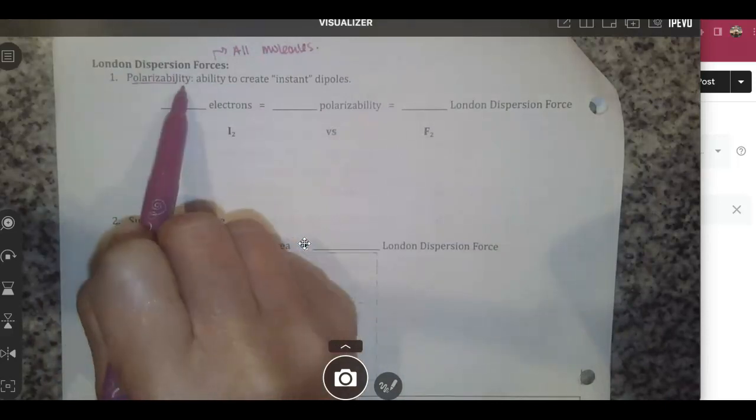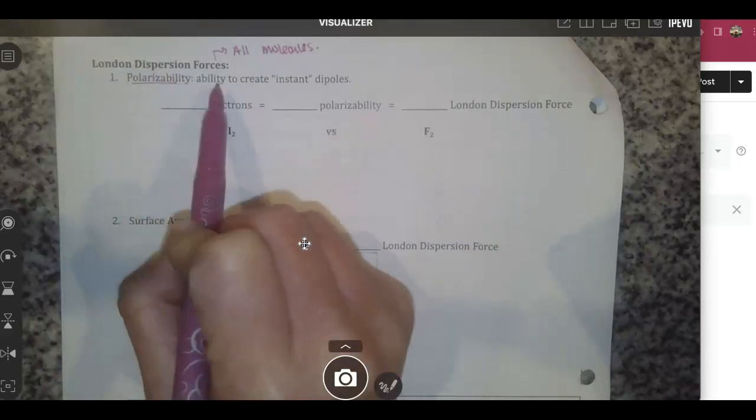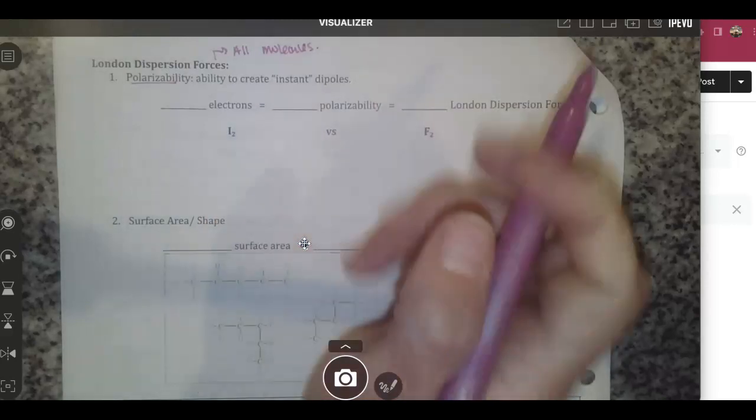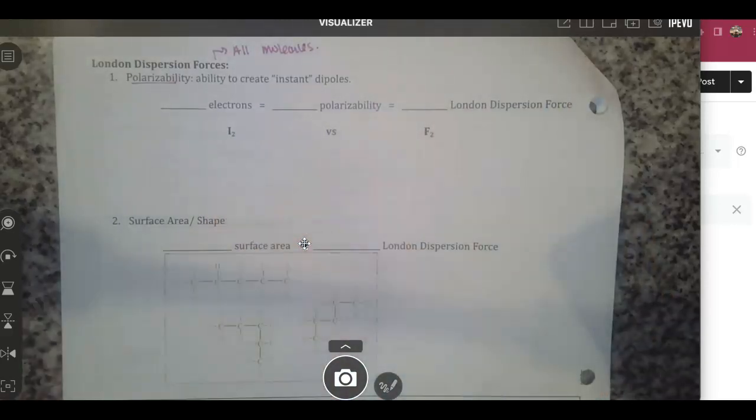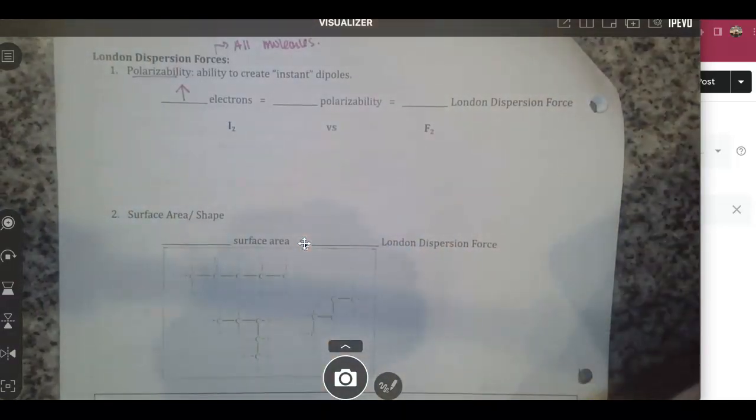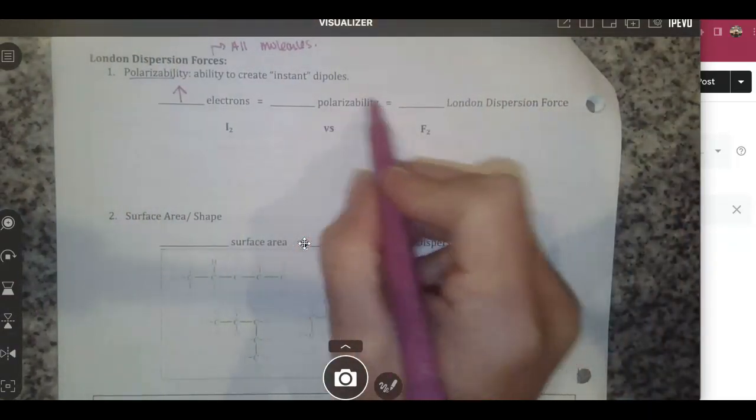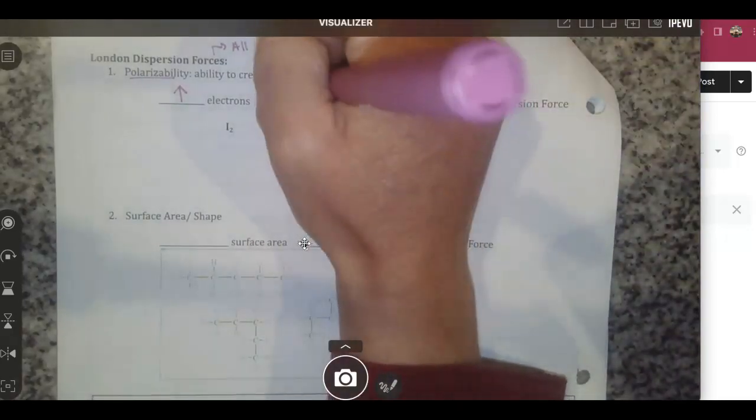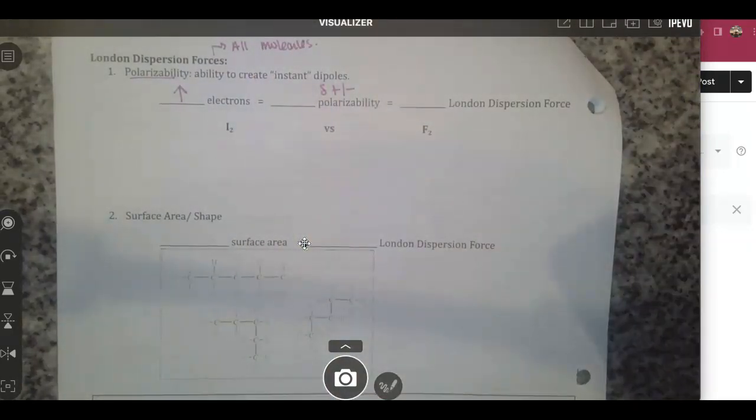The first thing we're going to look at is polarizability. Polarizability is the ability to create that instant dipole. This makes sense - if you have a lot of electrons, the more electrons you have, the more able you are to create that polarizability or that positive or negative charge, a partial positive or partial negative charge.